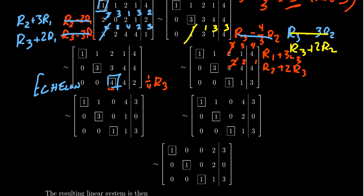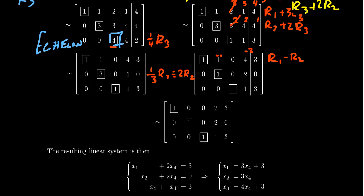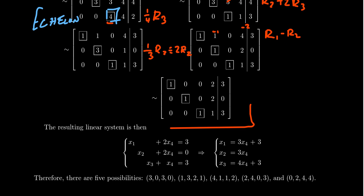The last step is to divide row 2 by 3, which is the same as multiplying by 2 since dividing by 3 equals multiplying by the reciprocal 2 mod 5. The 3 becomes 1, 1÷3 equals 1×2=2, and 0×2=0. Now to get rid of the 1 above, take R1 minus R2: 1−1=0 and 4−2=2. Now we have the matrix in RREF.